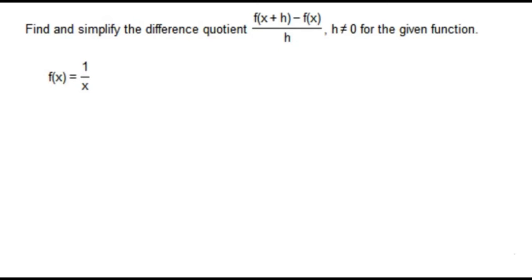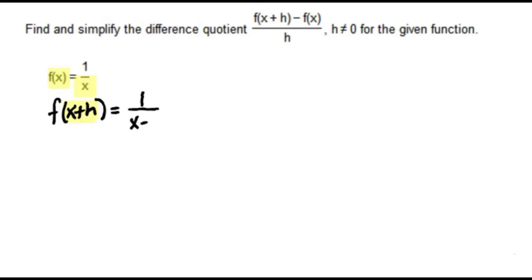To find the difference quotient, we're going to find the first expression within it, and that's f of x plus h. To find that, we want to replace the x in this expression with x plus h. So that becomes 1 over x plus h.